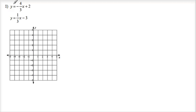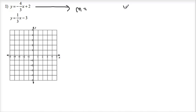First equation: y equals negative 4 thirds x plus 2. And our second equation: y equals 1 third x minus 3. For the first equation, let's graph this one. What is my slope? What is my y-intercept? The slope of the first equation is negative 4 over 3.